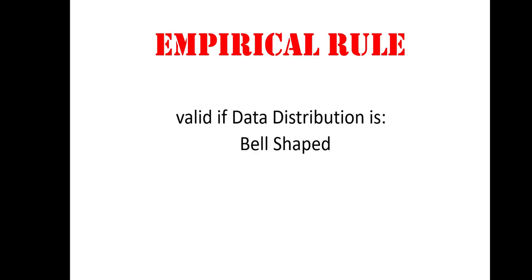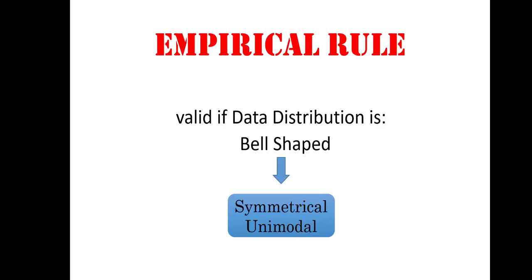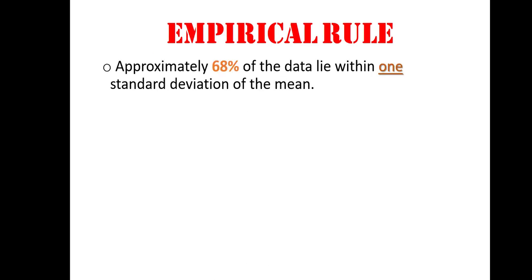Next I will be talking about the empirical rule. The empirical rule is valid if my data distribution is bell-shaped, symmetrical, and unimodal. The empirical rule says approximately 68 percent of the data will lie within one standard deviation of the mean.